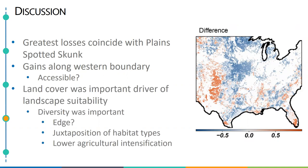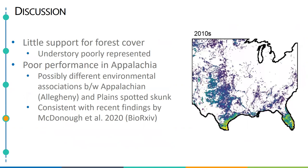Another interesting point was that land cover was an important contributor to the models — in particular landscape diversity — which might indicate a preference for edge habitat, the juxtaposition of multiple habitat types, and/or association with areas of lower agricultural intensification. Interestingly, forest cover was not important in the models; however, understory has been found to be important for eastern spotted skunks in forested environments, and this was poorly represented in our models. Our models also generally performed poorly throughout Appalachia, possibly because Appalachian spotted skunks have different habitat and environmental associations from plains spotted skunks, which may be consistent with the recent findings that these are distinct species.